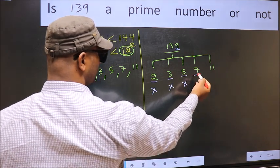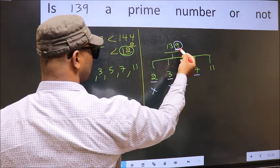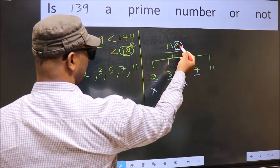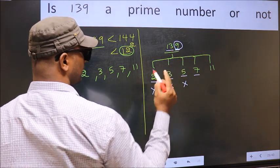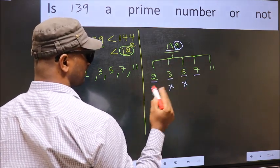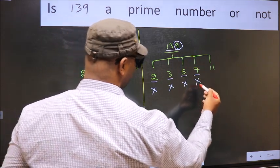Next number 7, to check divisibility by 7, you double this, 9 into 2, 18. Subtract from this, 18 minus 13, we get 5. 5 is not divisible by 7. So this number also not divisible by 7.